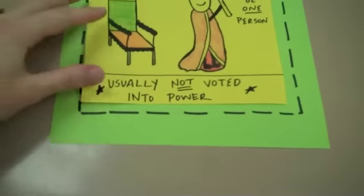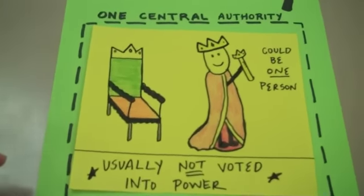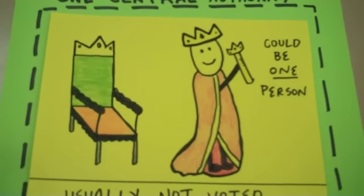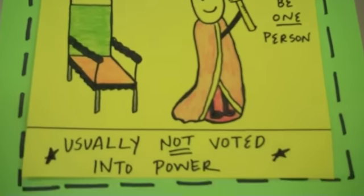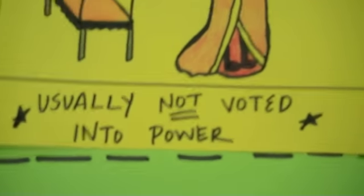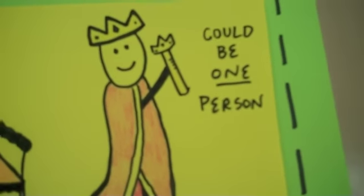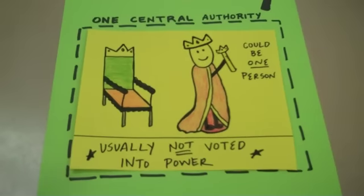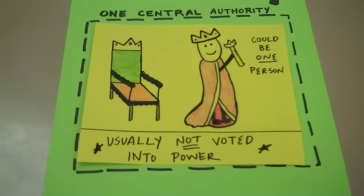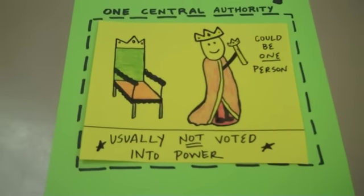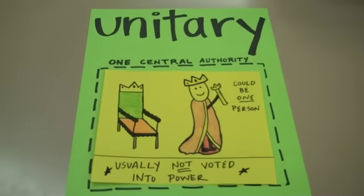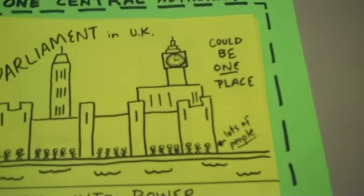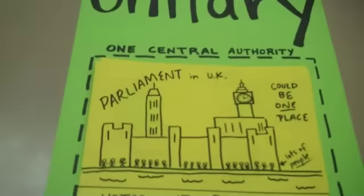Unitary could also be one person — like a king with his fancy throne and robes. However, this type of unitary — one person, autocracy — is usually not voted into power. They might come into power by revolution, or they could be voted in and then suddenly turn the whole system upside down. So again, unitary could be one person, or it could be one place like the Parliament with all the people.